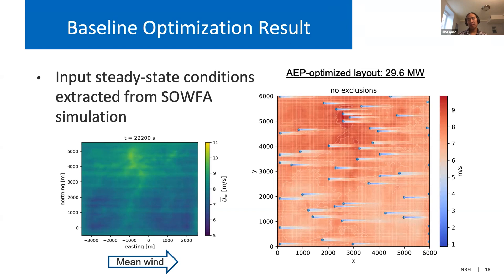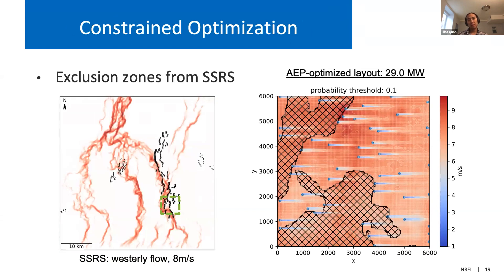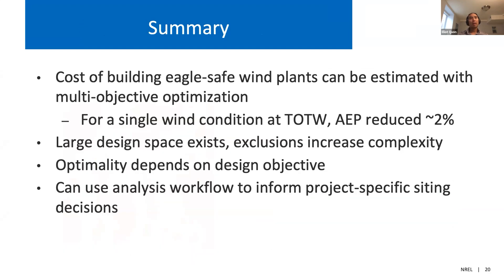We can then apply the SSRS model for the same conditions and, zooming in on the region of interest, derive exclusion zones — shown as the cross-hatched region in the figure. Accounting for eagle presence, our power production drops slightly from 29.6 to 29.0 megawatts. In summary, this shows that we can start to build up tools that estimate the cost of building eagle-safe wind plants. For this single wind condition at a single site, we arrived at an order-of-magnitude estimate: accounting for eagle presence reduced power by about 2%.